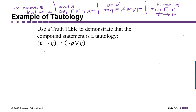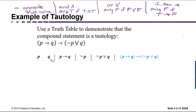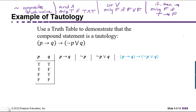The statement has two components, P and Q, so there will be two columns for P and Q, plus a column for each of the four connectives — six columns altogether. The columns are: P, Q, P implies Q, not-P, not-P or Q, and then the whole statement. There are four possible scenarios when we have two components: true/true, true/false, false/true, and false/false.